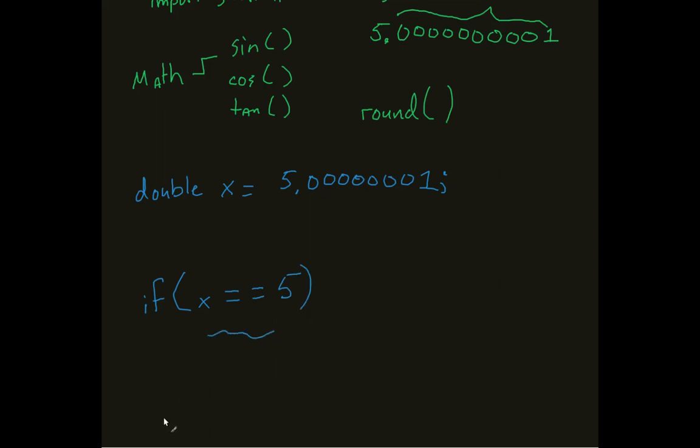Right now, this is not a true statement. x with 7 zeros and a 1 does not equal 5 whole number. So what can I do?